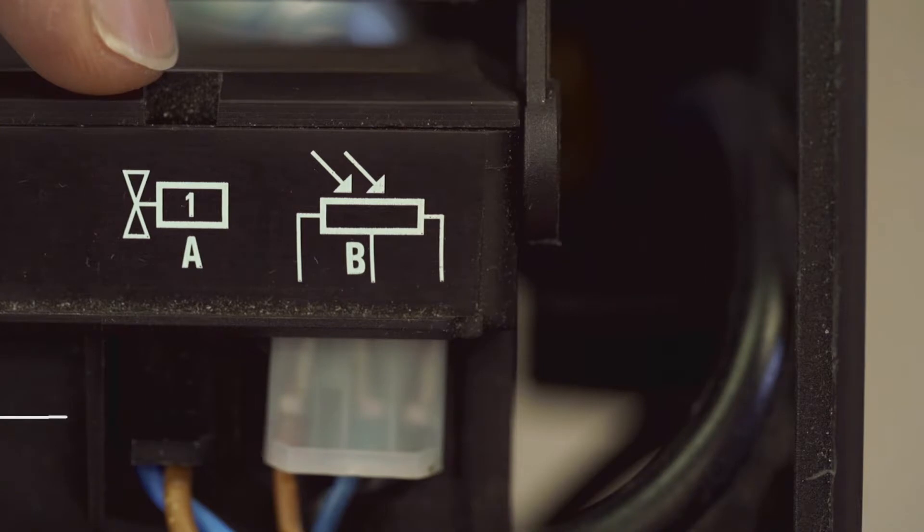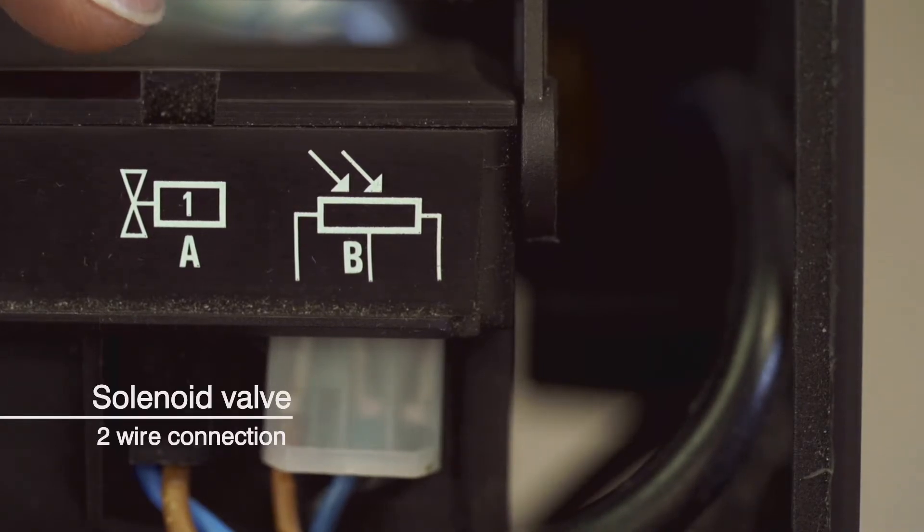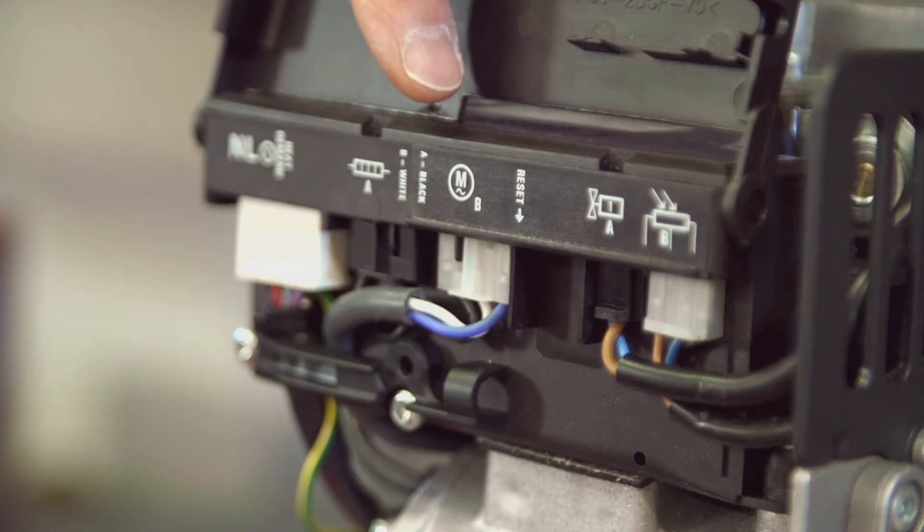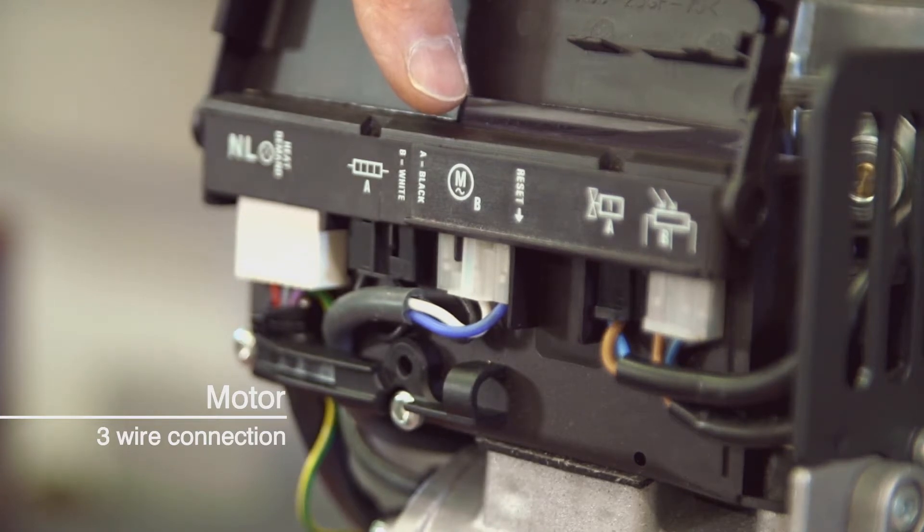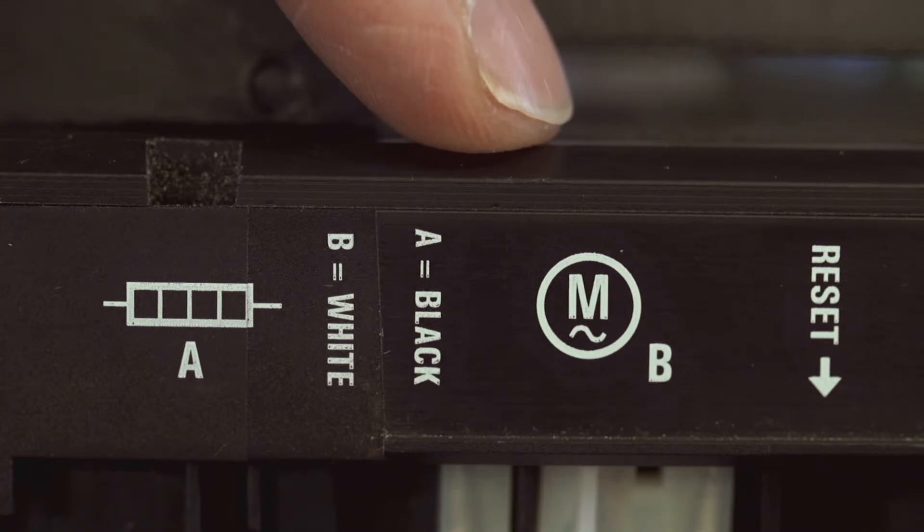Next is the solenoid valve connection, a two wire connection the same as the analog box. Here's the motor connection, again a three wire connection with the white wire providing the 52 volt AC supply to the control box from the motor, just the same as on other RDB burners.